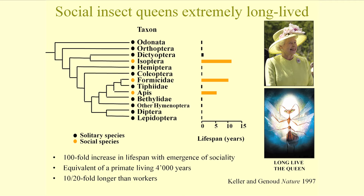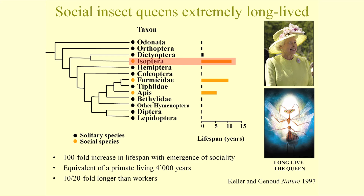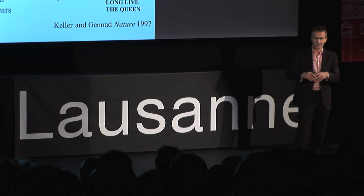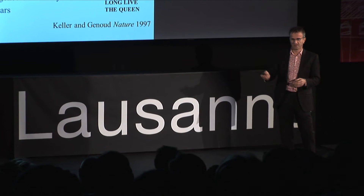What about social insects? Social insects also have a very long lifespan. Usually insects don't live very long — a few weeks, at most one or two months. But there are three groups of social insects with a very long lifespan: the termites, the ants, and the bees. In some species, the queen can live up to 30 years — more than 100-fold longer than solitary insects. So the evolution of sociality has allowed a major increase in lifespan.